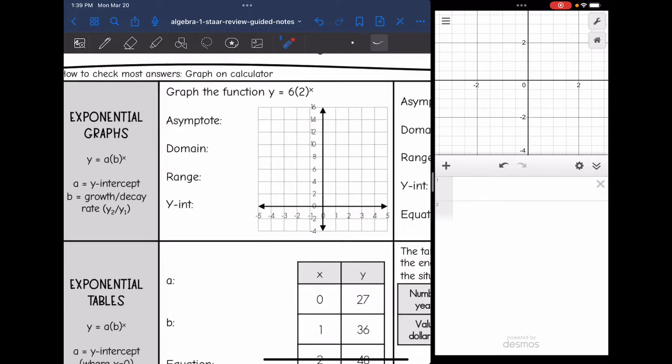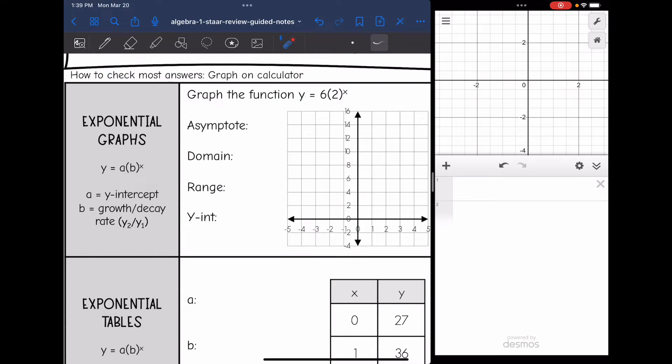So the first thing we're going to go over is exponential graphs. Remember, exponential functions can be written in the form y = a(b^x), where a is the y-intercept, and b is that constant multiplier, that growth or decay rate. It can be found by doing y2 divided by y1 with two consecutive points.